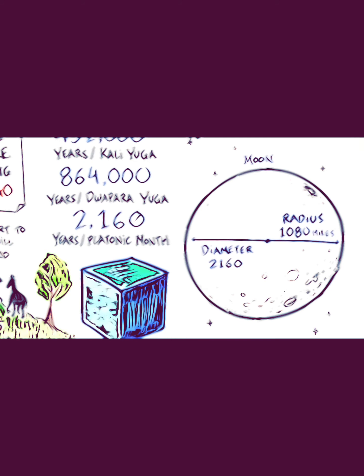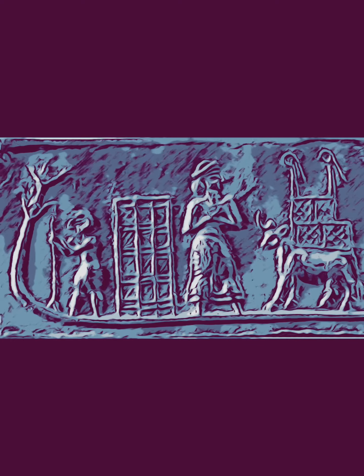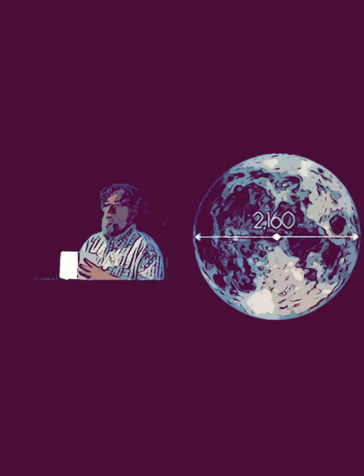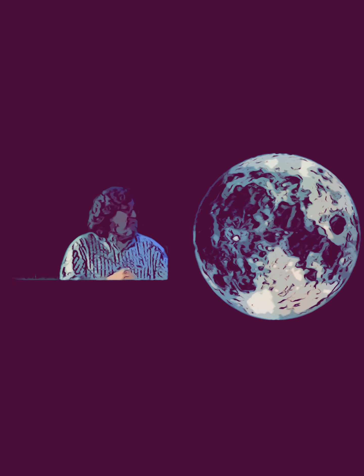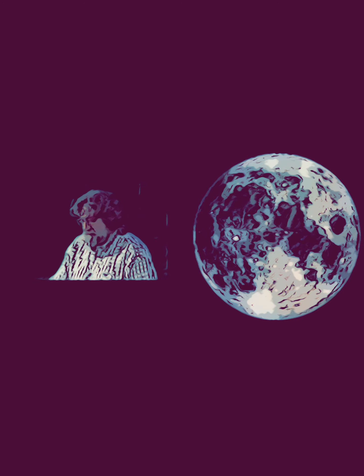1,080 and its double 2,160 were lunar numbers. In Sumerian tradition, the ark built by Ziusudra is described as a cube—not an actual ship, but referring to the cubing of the sphere, specifically the moon, which was symbolically considered an ark by ancient cultures believing Earth was periodically destroyed by catastrophes.